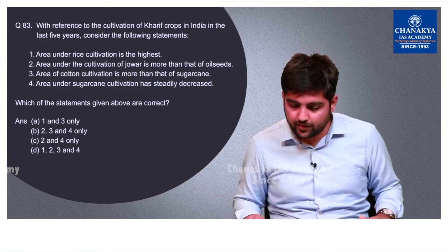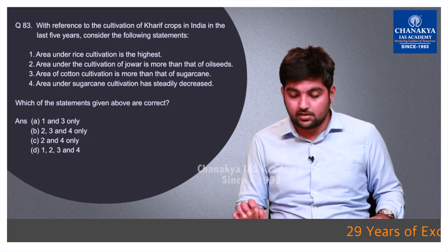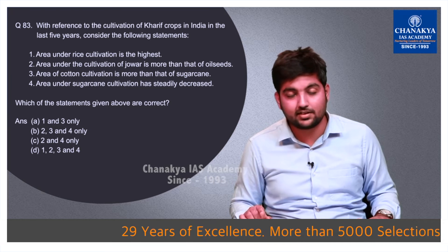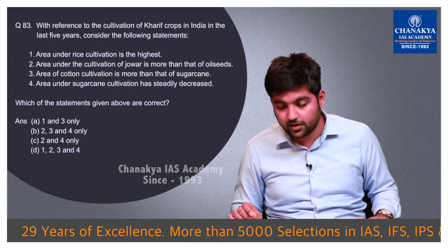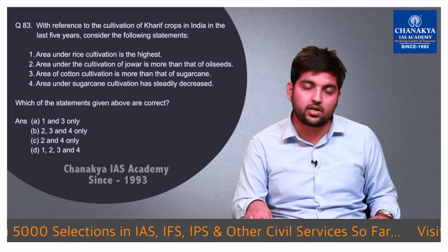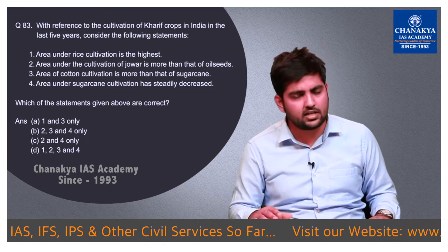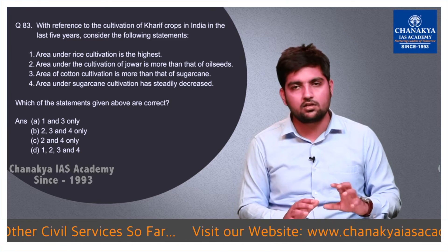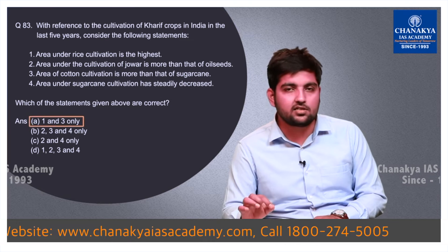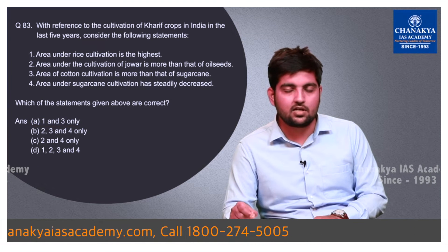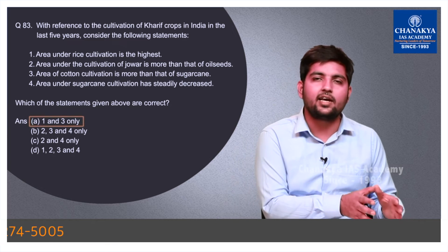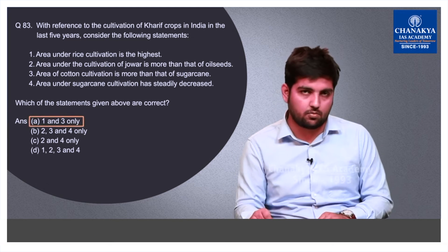Question number 83 is about the cultivation of Kharif crops in India in the last 5 years. If a person is thorough with the Economic Survey of at least 2 years, they can analyze trends. Statement 2 — that area under cultivation of Jowar is more than that of oilseeds — is completely wrong, as oilseed cultivation is widespread across India while Jowar is mainly in semi-arid and arid regions. The correct option is A — 1 and 3 only.